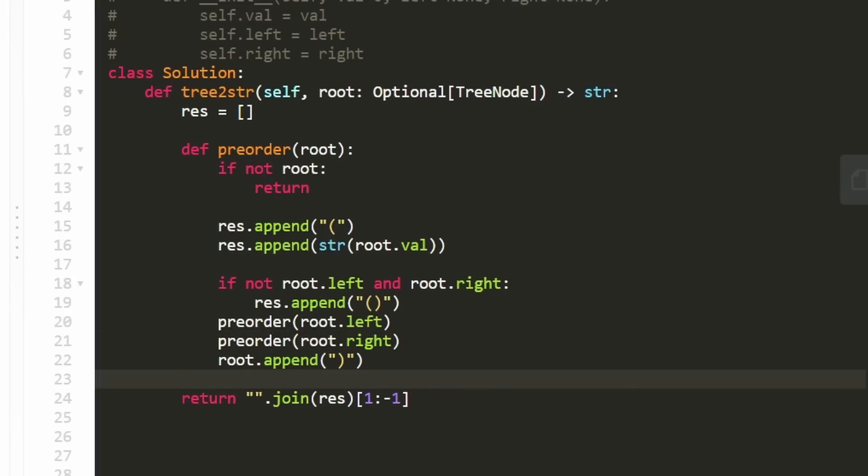Oops, I guess we had another couple bugs. First of all, we should not be appending to the root. The root is a tree node. We want to append to the result. I had it correct up here. Don't know, I probably turned my brain off when I was writing that line of code. And also, we wrote our preorder function, but we never called it. That's a really easy thing to forget. We're going to call it, passing in the root node that we were given in the outer function. Now, let's run the code and make sure that it works.